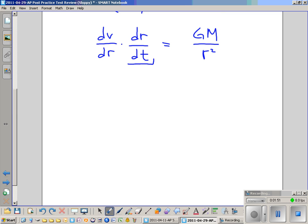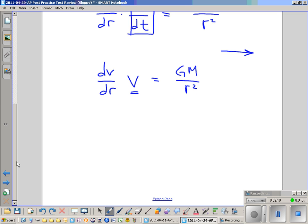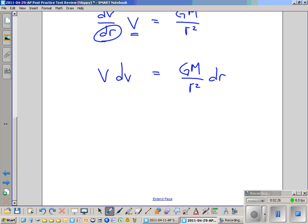So dv/dt, r is just our displacement, so dr/dt is just velocity. What we're saying is dv/dr times velocity is equal to GM over r squared. It's a good thing we got a velocity term in there because that's what we're trying to figure out. So now we're going to take and say that v dv is equal to GM over r squared dr. Now we're going to integrate each side. We're going to say that the integral of v dv is equal to the integral of GM over r squared dr.